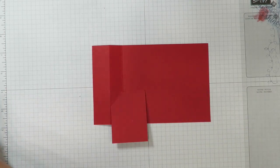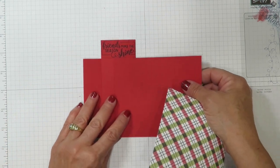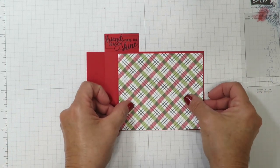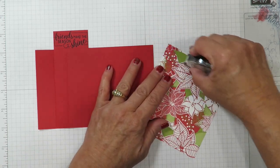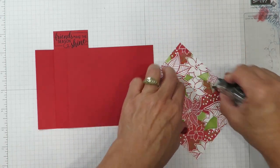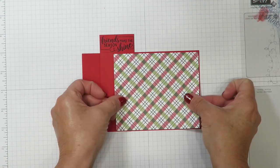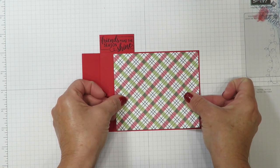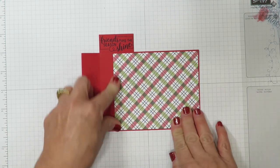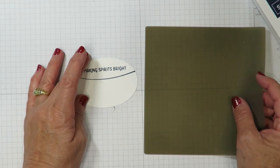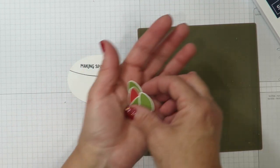While that's drying, let's go ahead and adhere the designer series paper to the front of our card. I'm going to flip that over and I've got my designer series paper here and I'm going to use snail adhesive for that. If you want to use the liquid glue, that's totally fine. I'm going to be fairly generous because I want to make sure that those edges don't lift and this is going to leave just a small margin of real red cardstock all the way around.